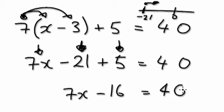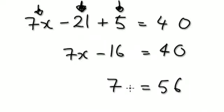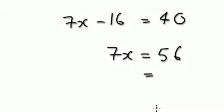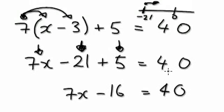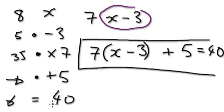On this side it would be 40. Now add 16 to both sides — so this would be 56, and this would be 7x. Now divide both sides by 7. So x equals 8. So the number I was thinking of was 8. If you put 8 in here: 8 take away 3 is 5, times 7 is 35, and then add 5 is 40.